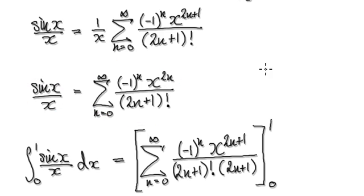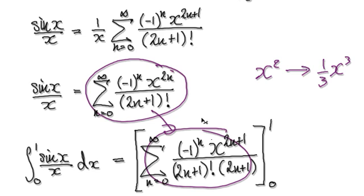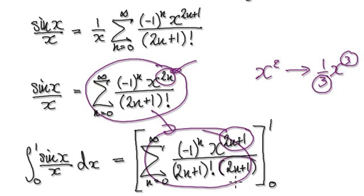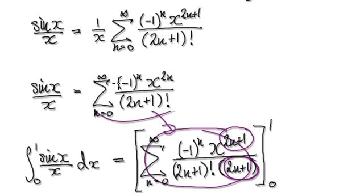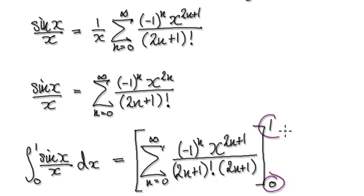Now we need to integrate the series. Remember, if you integrate x^2, it gives you x³/3. So integrating each term: a term of the form x^(2n) integrates to x^(2n+1) divided by (2n+1). Integrating the full series from 0 to 1 gives us this expression.